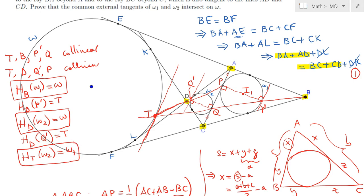For the final step, I claim that T is the center of a third dilation that takes omega2 to omega1. Notice that P, Q prime, T are collinear and P prime, Q, T are collinear. Moreover QQ prime is a diameter of omega2 and PP prime is a diameter of omega1, with Q prime mapped to P and Q mapped to P prime. These diameters are parallel to each other, so two parallel diameters are mapped to each other under the dilation centered at T. This proves that T is the center of dilation taking omega2 to omega1 with a positive ratio.